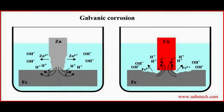Here we can see zinc being corroded in the presence of iron in an electrolyte bath. This is because zinc is more anodic than iron, and gives up ions into the solution. On the right, we can see copper corroding iron, because copper is actually less anodic than iron. One can imagine if we had a copper structure on an iron frame, like the Statue of Liberty perhaps, we would run into problems in the structural design.